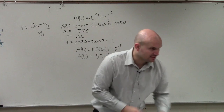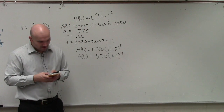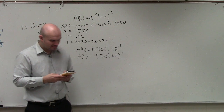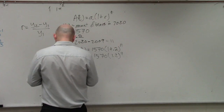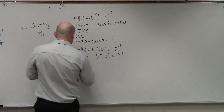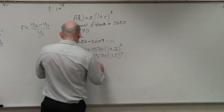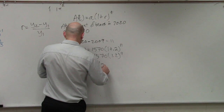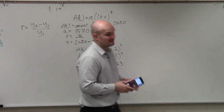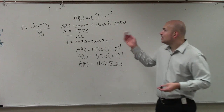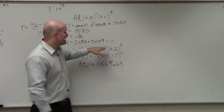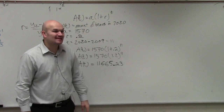You are going to need to use a calculator. Take 1.2, raise it to the 11th power, and then multiply that by 1,570. So exponentially growing this, you can see that if you start with a population of 1,570 bears and it grows exponentially at a rate of 20%, in 11 years it's 11,665.